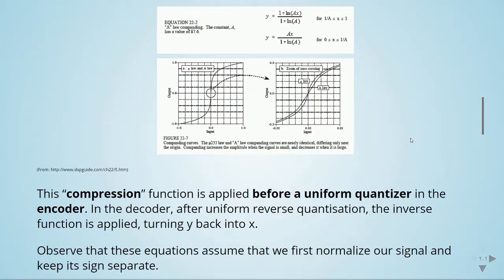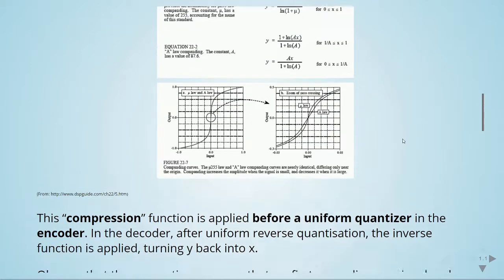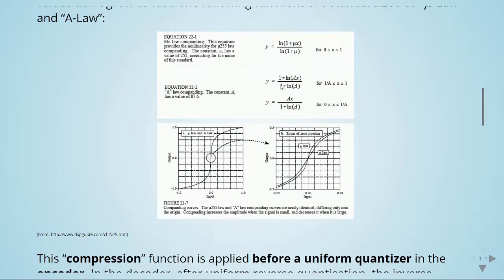This compression function is applied before a uniform quantizer in the encoder. In the decoder, after uniform reverse quantization, the inverse function is applied, turning y back into x.